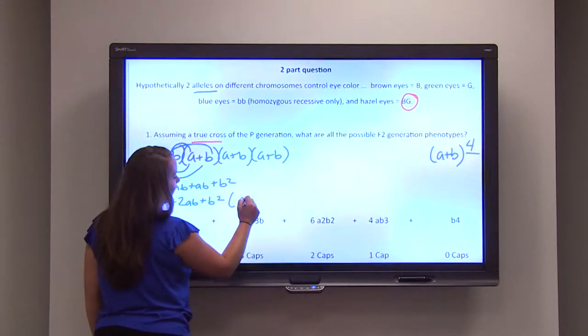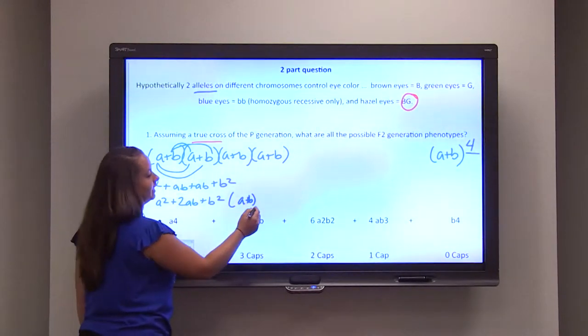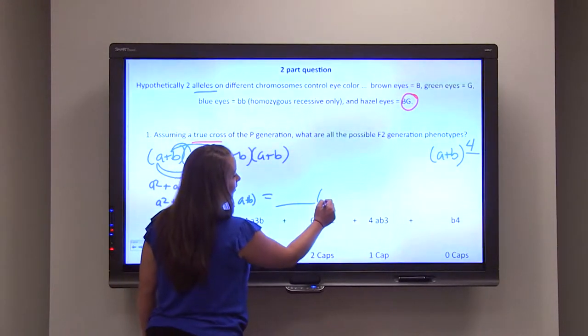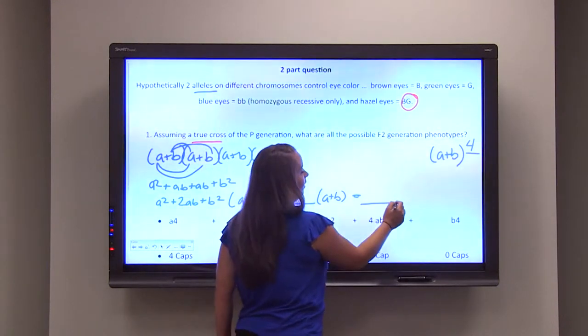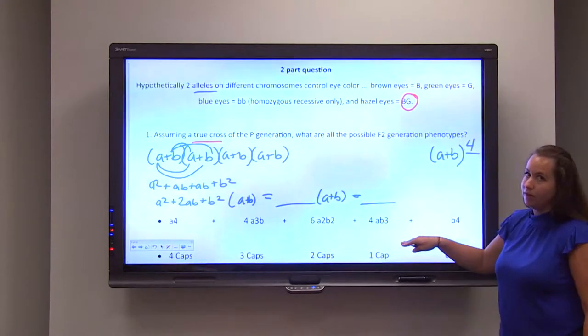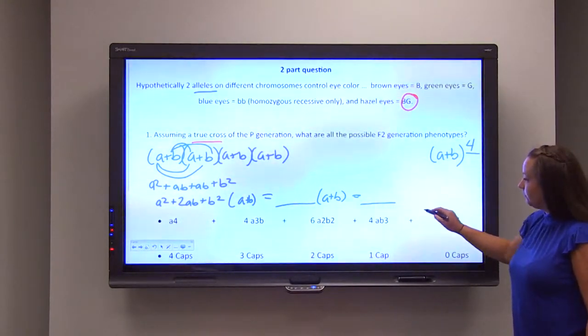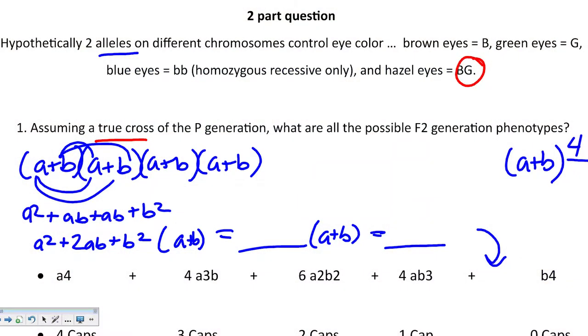Then you have to add in another parentheses and perform the same calculation. Once you get that answer, you're going to perform another multiplication parentheses. When you get it done, your end result is listed for you, right here. We've got A to the fourth, 4A cubed B, 6A squared B squared, 4AB cubed, and then B to the fourth.